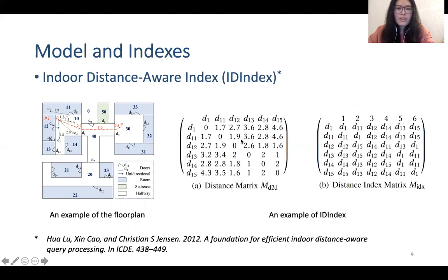The next one is ID index. It's a kind of matrix-based index. It contains two matrices. The first one is distance matrix, which stores all door-to-door distances. And the other one is distance index matrix, which helps speed up finding distance of two doors.